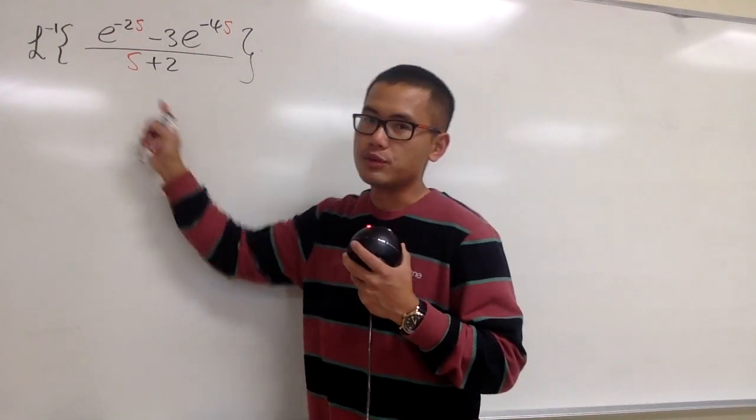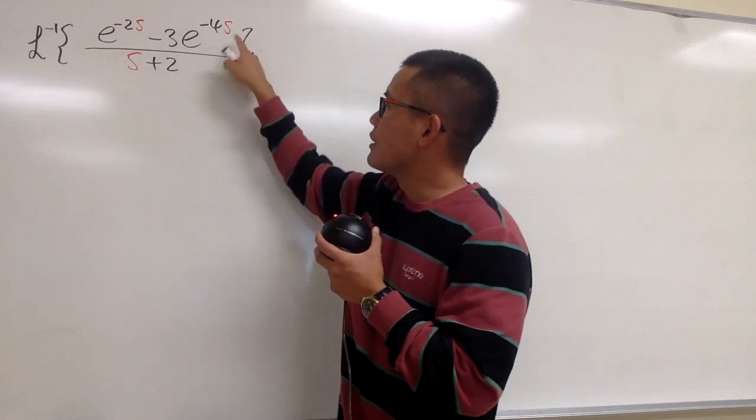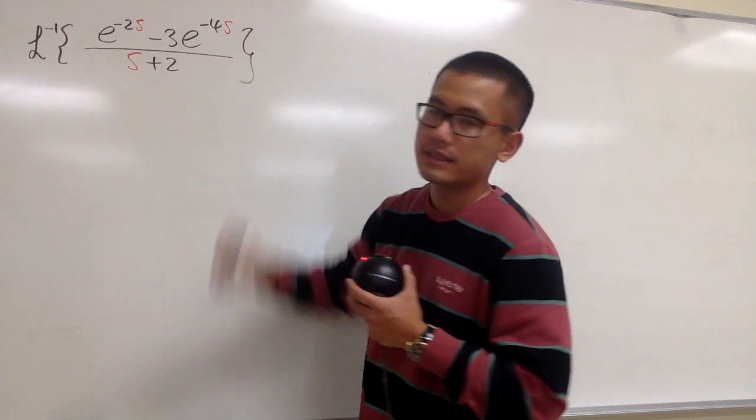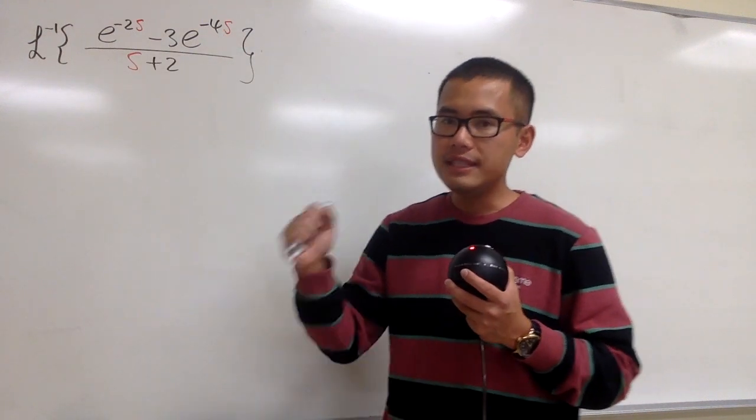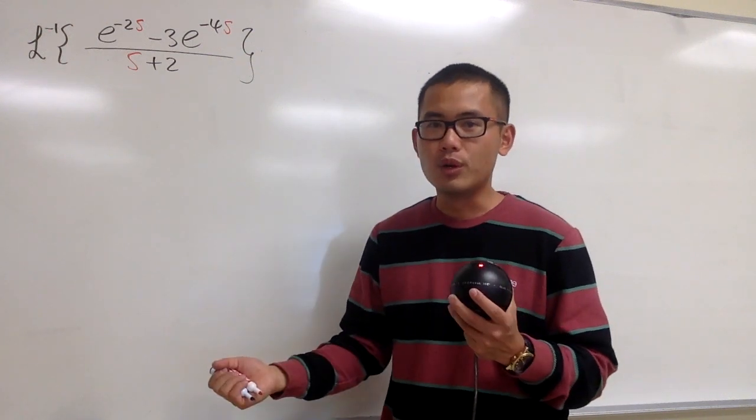Okay, we're going to figure out the inverse Laplace transform. We see that we have e to the negative 2s, and this is e to the negative 4s. Remember, whenever we have e to the negative a times s, we'll end up with a unit step function in the t world.